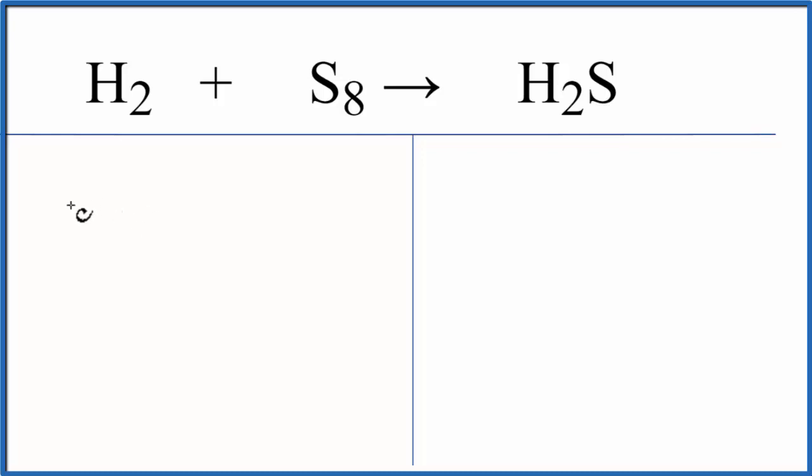Let's count the atoms up on both sides of the equation. Hydrogen, we have 2. Sulfur, we have 8.